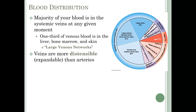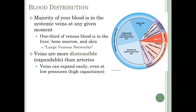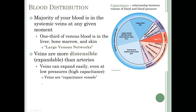Veins are more distensible — more expandable — than arteries, and can expand easily even at low pressures. This characteristic is called high capacitance. Capacitance is the relationship between volume of blood and blood pressure. If you're able to expand easily at low pressure, you have high capacitance. Veins, since they can do this, are called capacitance vessels. Remember: arterioles are resistance vessels; veins are capacitance vessels.